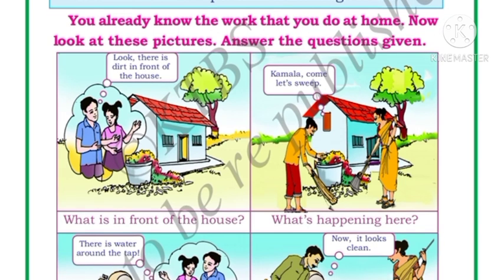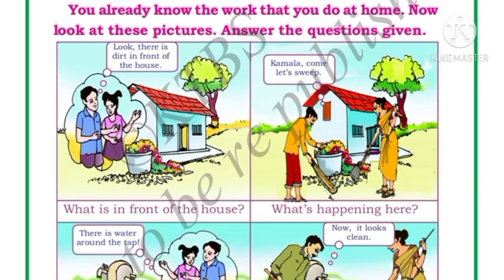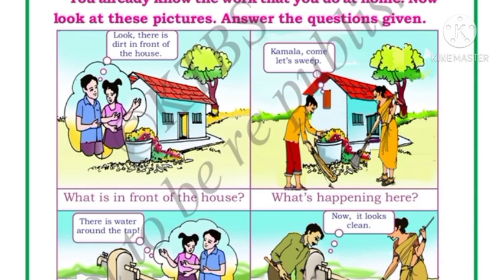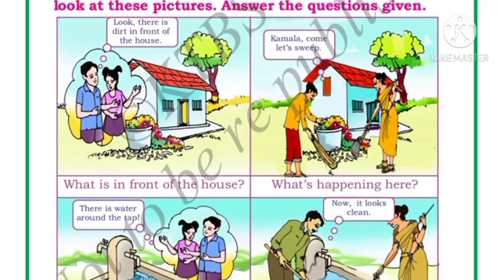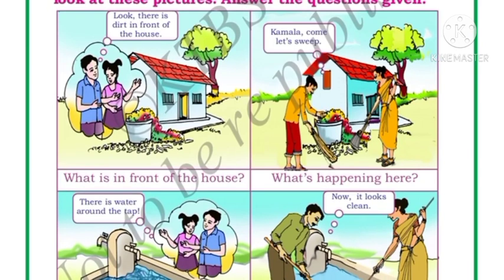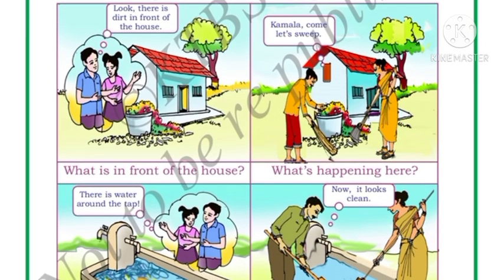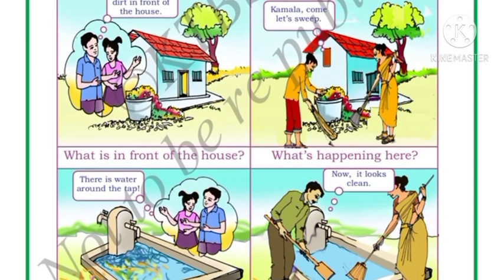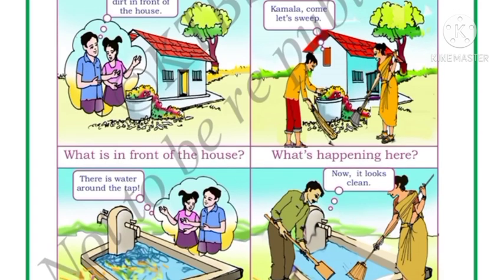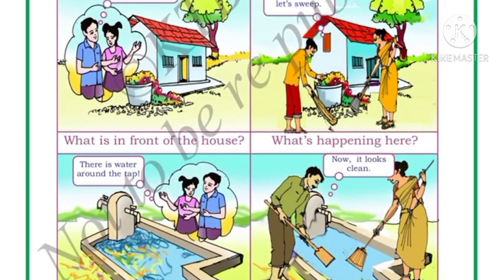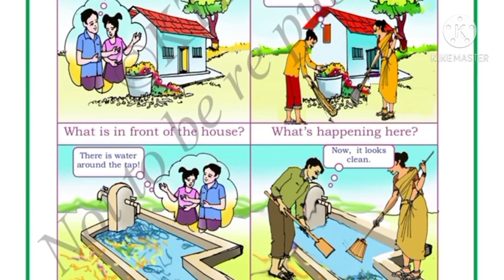Look at the first picture — what do you see here? You can see dirt in front of the house. In the next picture, what is happening? Here two people are cleaning. One is telling Kamala, 'Come, let's sweep.' So they are cleaning together.